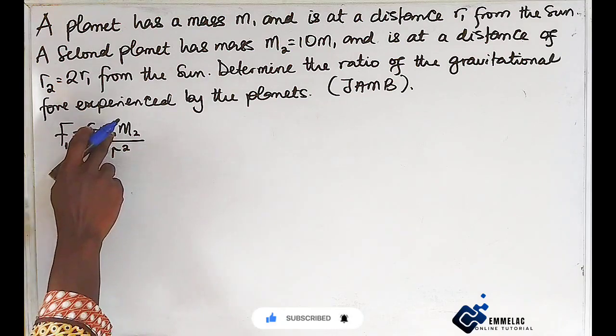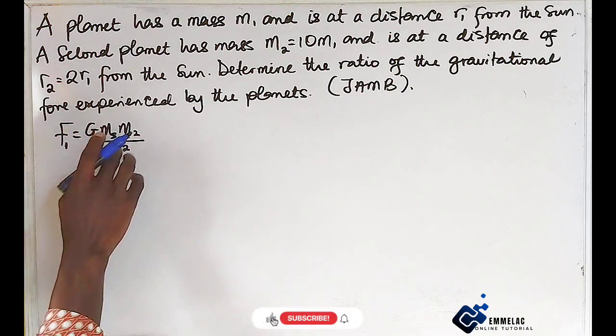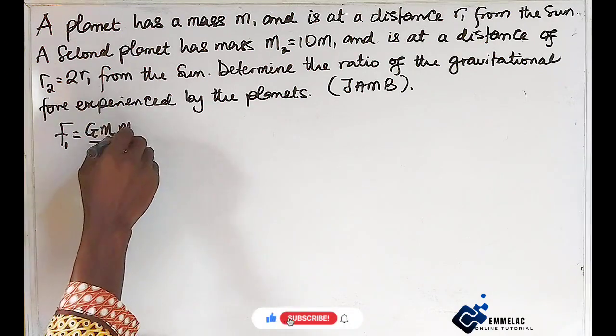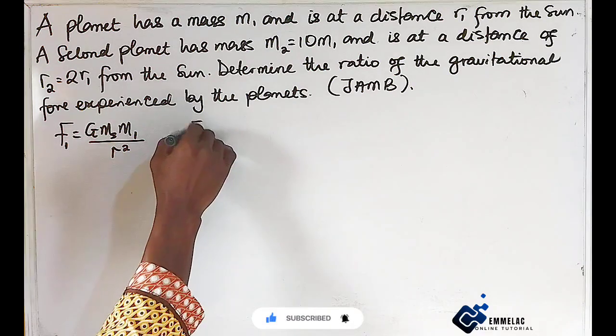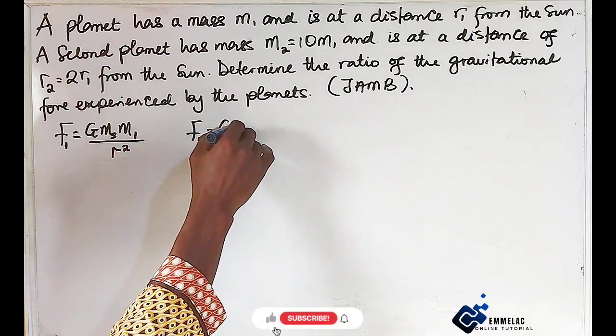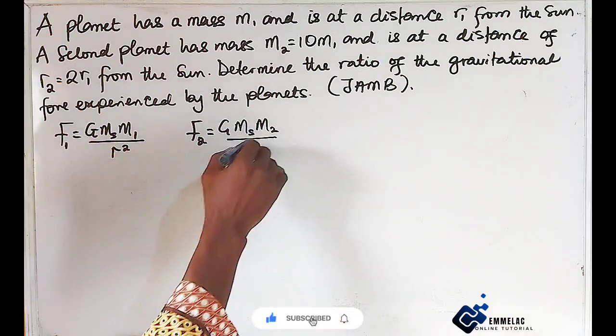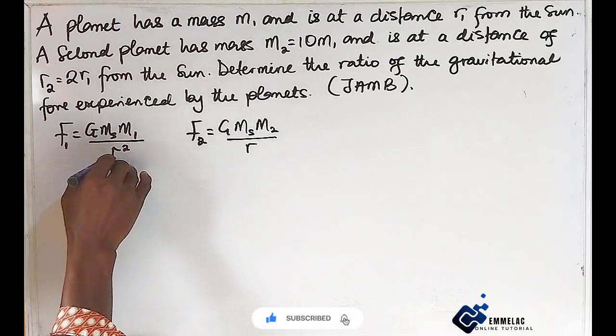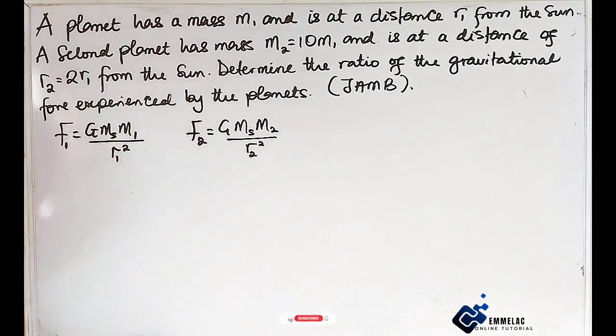Now for planet 2, we have F2 = GMsm2/r2². But we know from the question that m2 equals 10 times m1.